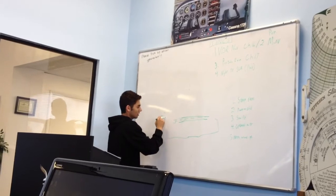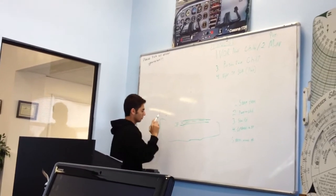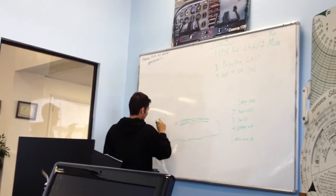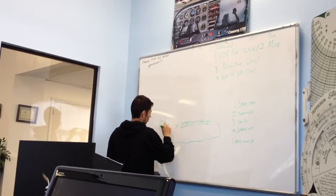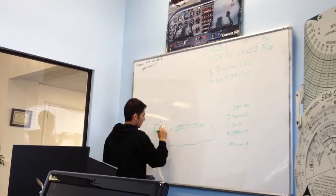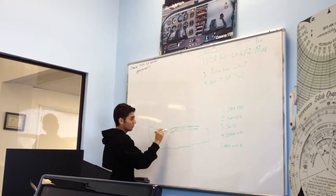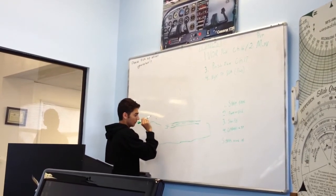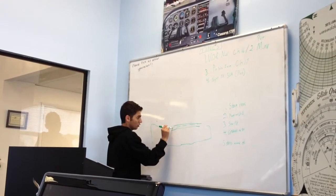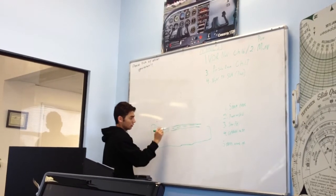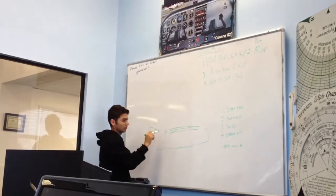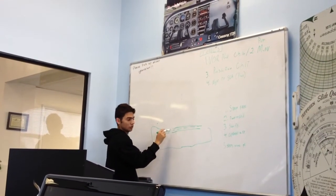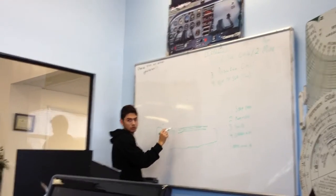To reach the centerline, you put on 30 degrees flaps and you go down. You always want to pick — you always want to look at the center, where you want to go. Not looking here, you know? Always look at the number.